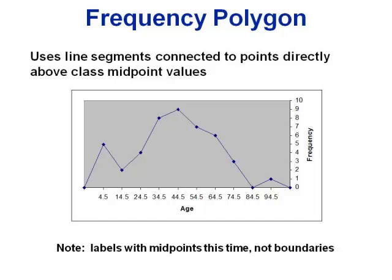Another option is the frequency polygon. These are similar to histograms, except instead of drawing a bar, you just put a dot at the height and connect all the dots. With frequency polygons, we use the midpoints, not the class boundaries. On the left it starts down at zero, and on the right it comes back down to zero before it ends.